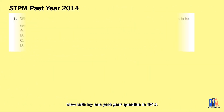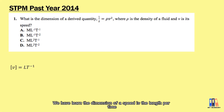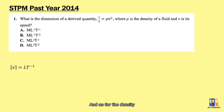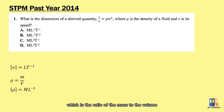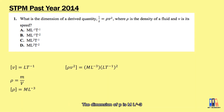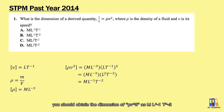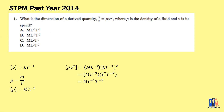Now let's try a past question from 2014: determine the dimension of the derived quantity ρV², where ρ is the density of the fluid and V is speed. Speed has dimension L/T. Density is mass divided by volume, giving dimension M/L³. Combining ρV²: M/L³ × (L/T)² gives M/(L·T²), which corresponds to answer E.